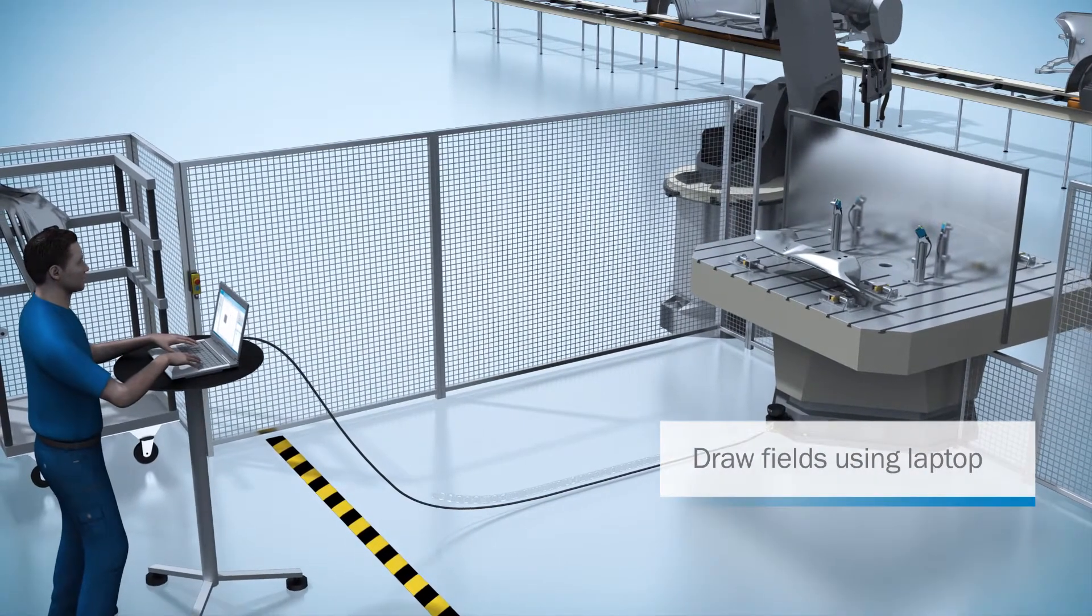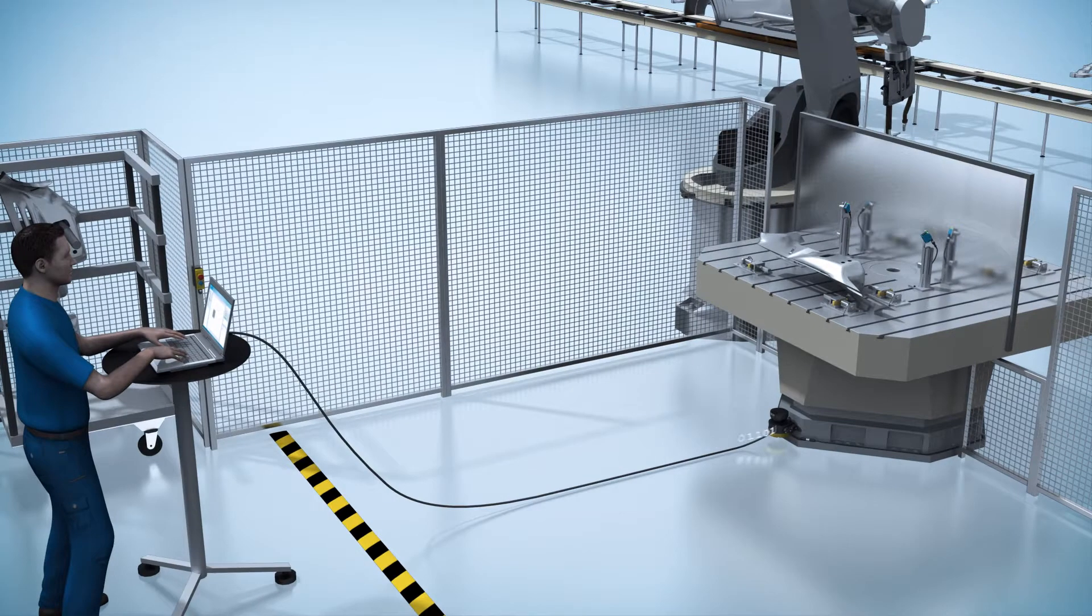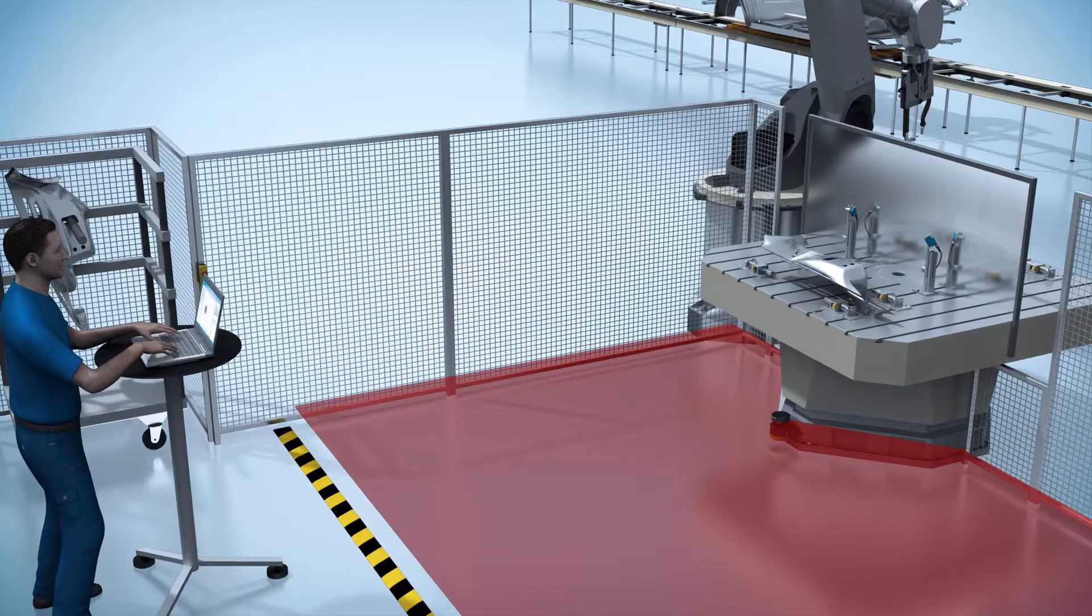After that, the configuration data is transferred to the scanner via USB with just a click of the mouse, and then the MicroScan3 monitors that defined area.